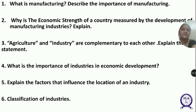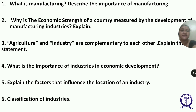The last classification is on the basis of bulk and weight: heavy industries and light industries. Heavy industries include iron and steel. Light industries use light raw materials and produce light goods, such as the electrical industry.